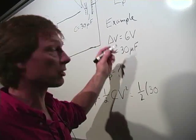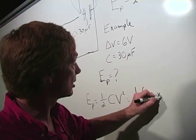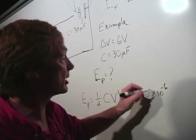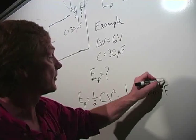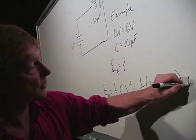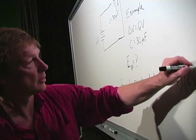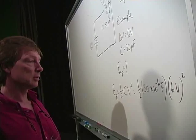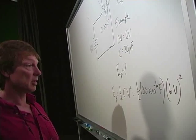Farads times 6 volts squared, which is going to be 18, 540. I think 5.4 times 10 to the minus 4.